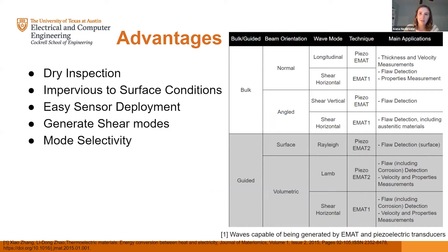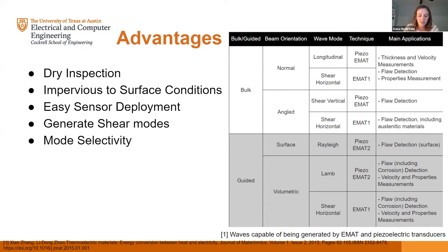The advantages of using an EMAT compared to a piezoelectric transducer: first, you don't need a couplant for transmitting sound. This makes it great if you're working with something very hot or very cold, because you don't have to deal with evaporation or freezing. It can also be integrated into automated environments more easily, since you don't have to apply and then clean up the couplant, making the process quicker. Additionally, you're impervious to surface conditions — you don't have to deal with roughness, oxidation, or pollutants.